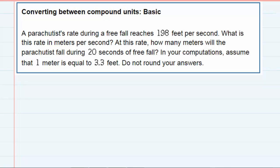Converting between compound units. We're told that a parachutist's rate during a free fall reaches 198 feet per second. What is this rate in meters per second? And then at this rate, how many meters will the parachutist fall during 20 seconds of free fall? In your computations, assume that one meter is equal to 3.3 feet.